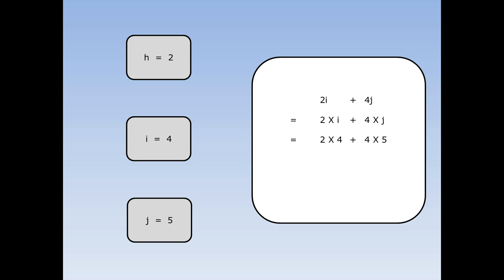We can swap the i for a 4 and the j for a 5. 2 times 4 is 8, 4 times 5 is 20. 8 plus 20 is 28. 2i plus 4j equals 28.